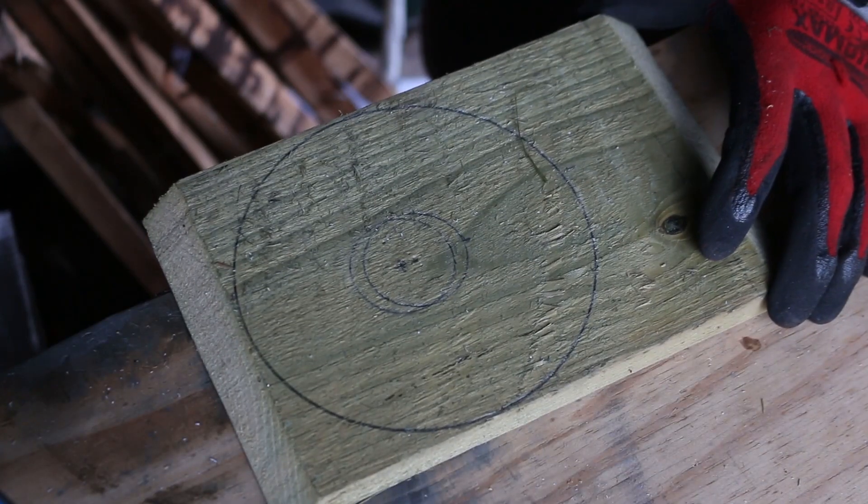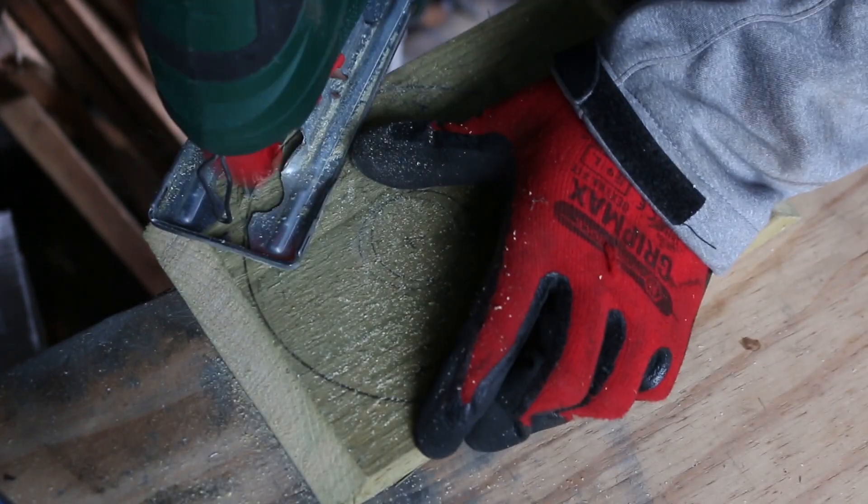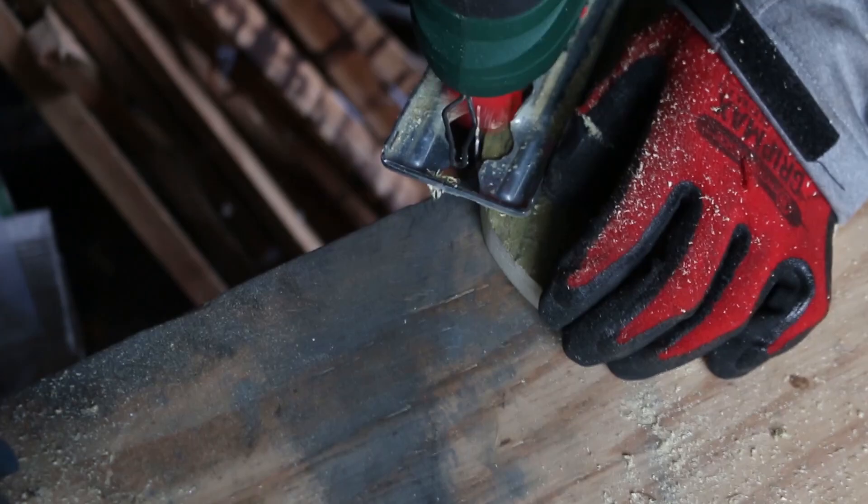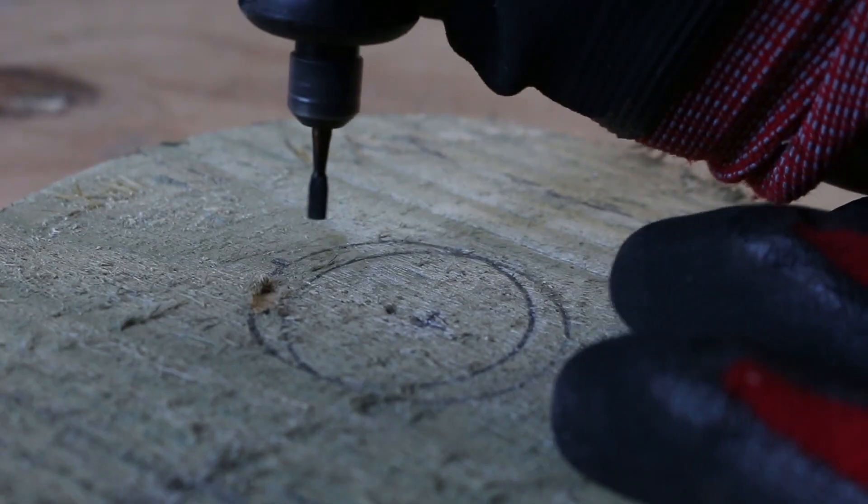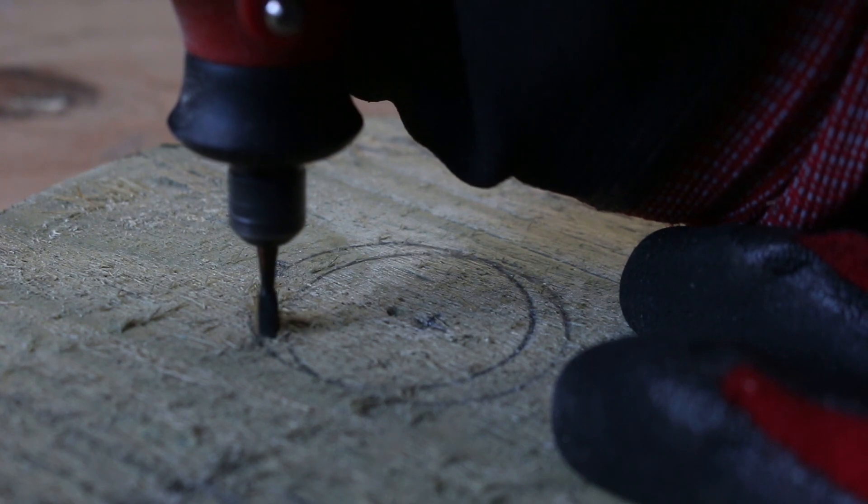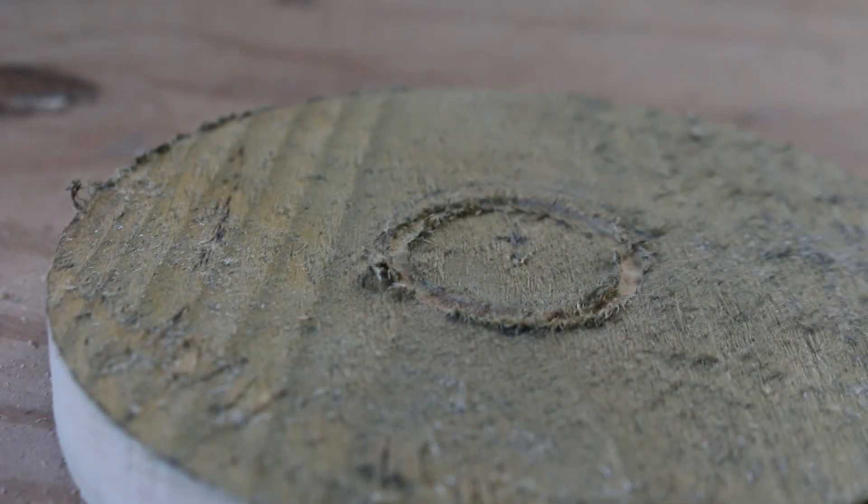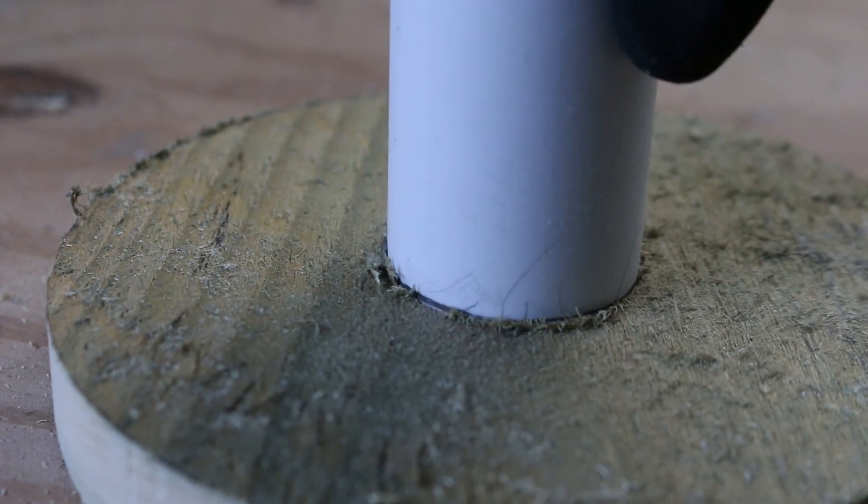But it's not gonna stand by itself, so I need to make a base. And I'm cutting a circle out of a leftover plank from a sandbox I made in one of my earlier videos. Now using a rotary tool, I'm making a shallow groove for the pipe to stand in. Perfect.